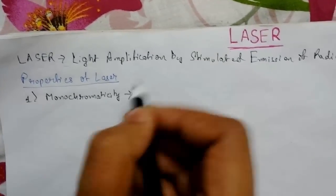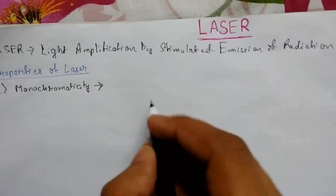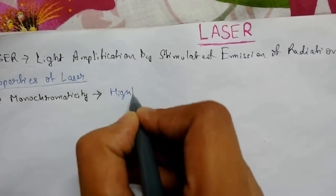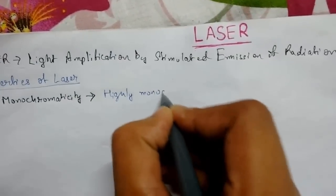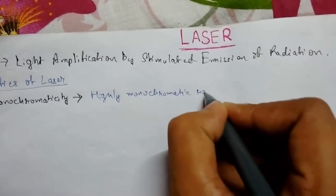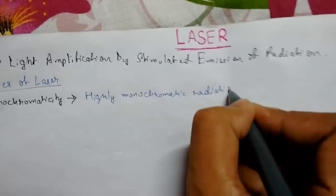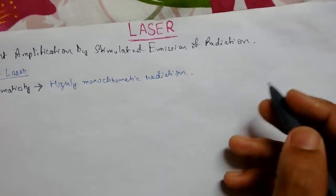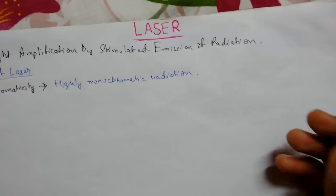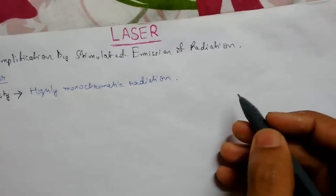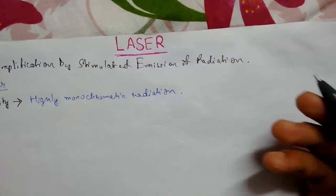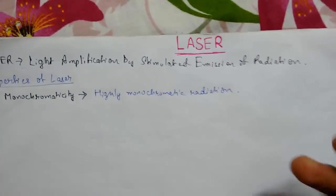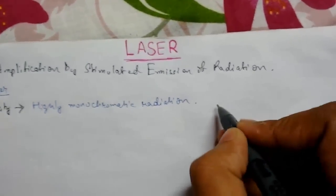Laser is highly monochromatic radiation. The normal or conventional monochromatic source of light has wavelengths. For example, normal yellow has wavelengths of 5890 angstrom.